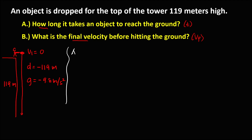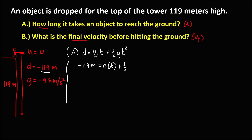To find how long it takes the object to reach the ground, we use the formula: displacement equals initial velocity times time plus one half times gravity times time squared. Substituting values: negative 119 meters equals zero times t plus one half times negative 9.8 meters per second squared times t squared.